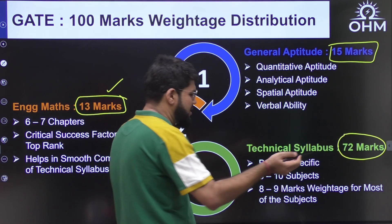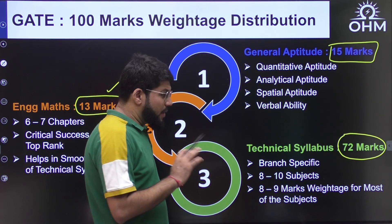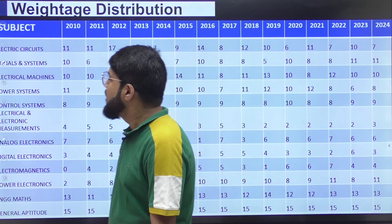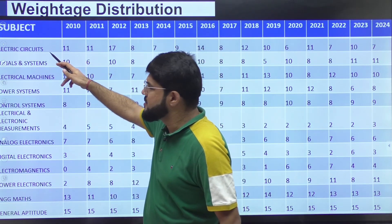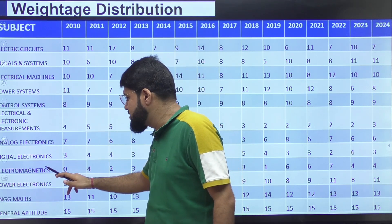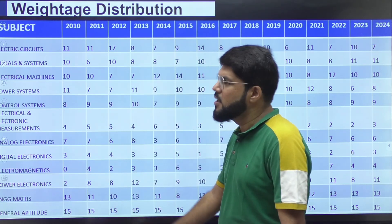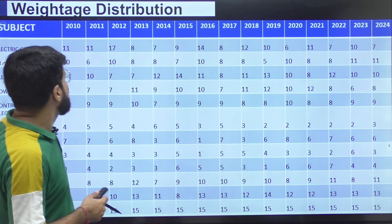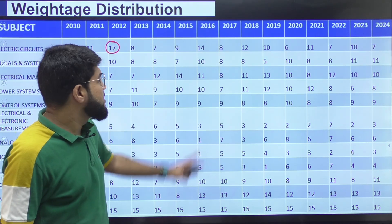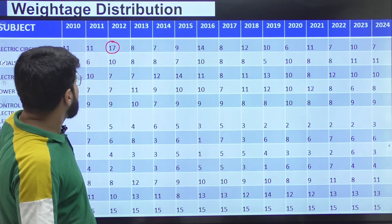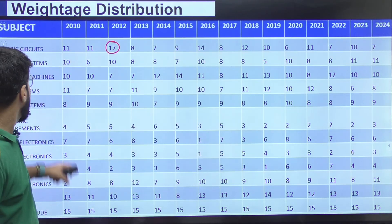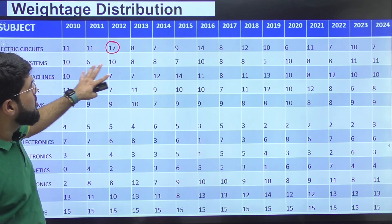Technical is 72 marks with around 8 to 10 subjects depending on branch. The subjects are: electric circuits (network theory), signals and systems, machines, power systems, control systems, measurements, analog electronics, digital electronics, electromagnetics, power electronics, plus maths and aptitude. For networks, it can go as high as 17 unexpectedly — that depends; IIT Delhi made one such paper — sometimes touching 14, but to summarize, you're getting somewhere around 8 to 10 marks most of the time. For signals, the last two years showed 11 marks each, and signals weightage has definitely increased for EE over the last few years — around 9 to 10 marks is what you can expect.